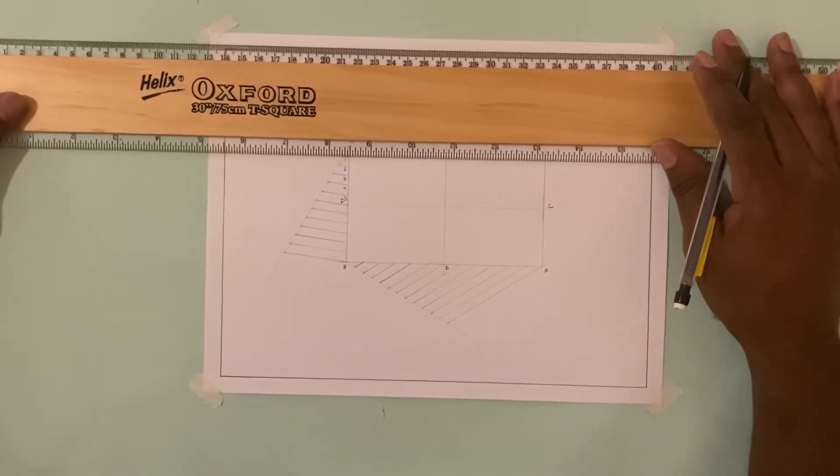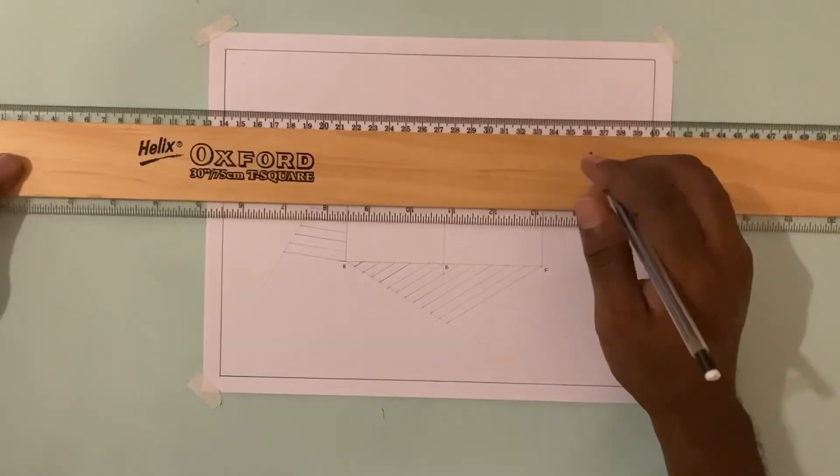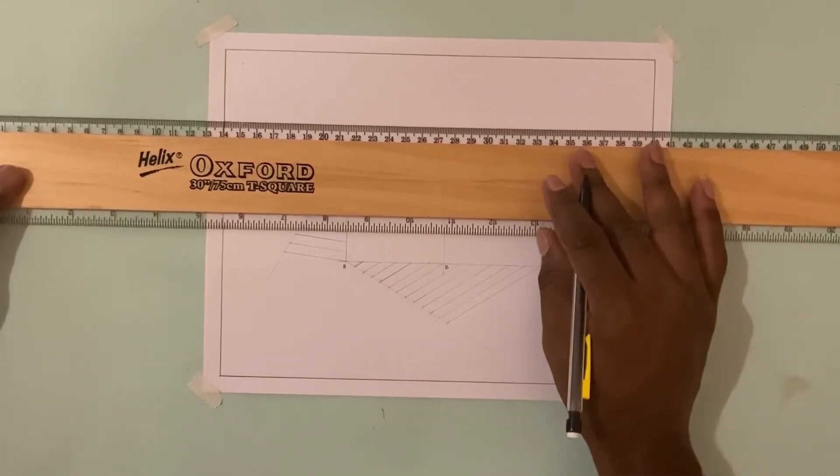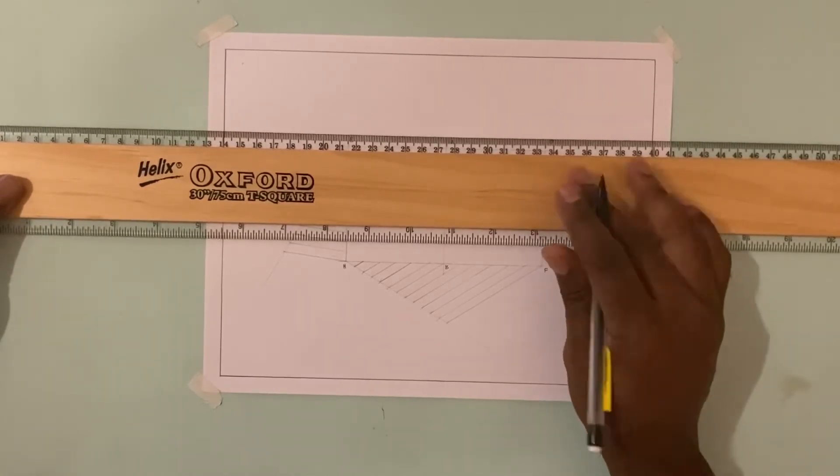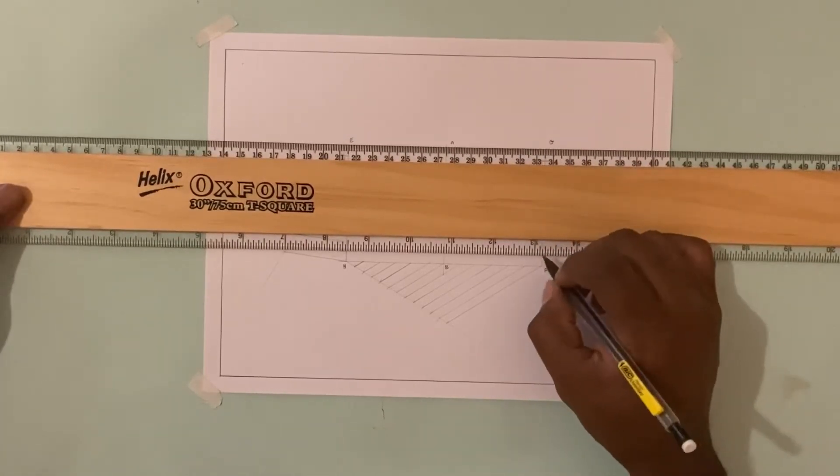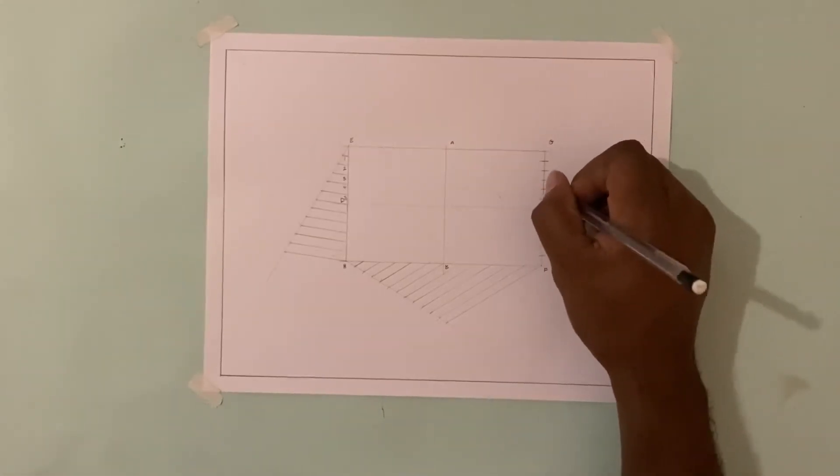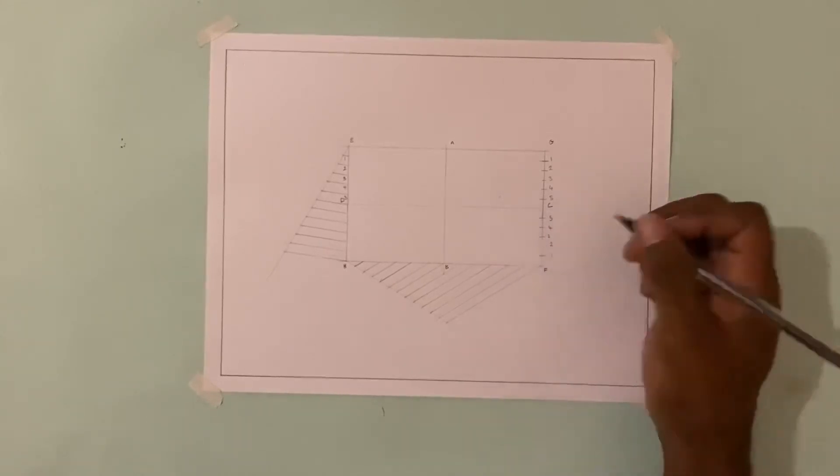I'm just going to go ahead and line up, number these points 5, 4, 3, 2, and 1, and right here again 5, 4, 3, 2, and 1.